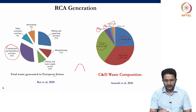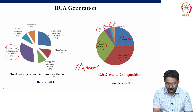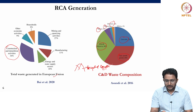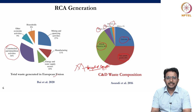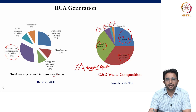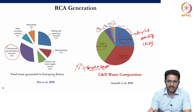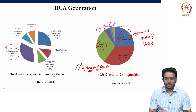When C&D waste comes in and is crushed into small sizes, the aggregates generated are called recycled aggregates. The quality of recycled aggregates has been seen to be very inferior to natural aggregates. However, if only the concrete portion is crushed and resized, the material is called recycled concrete aggregate — RCA. The quality of RCA has been seen to be significantly better than recycled aggregate, because recycled aggregate is a mixture of different components.